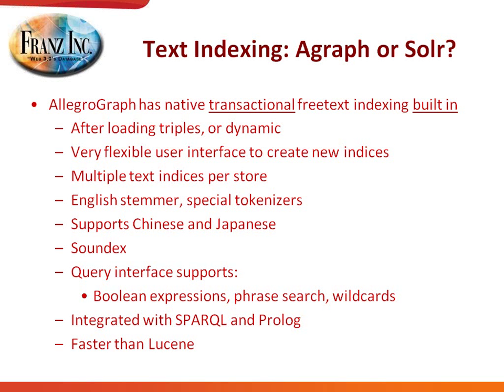I'll show you in a minute a very flexible user interface to create these new indices. You can have multiple indices per store. We have stemmers, we have tokenizers, we support Chinese and Japanese, soundex, and we can do all the kinds of queries you might expect to support — fully integrated with SPARQL and Prolog. And it's actually faster than Lucene, both for indexing and for retrieving, because it's built into the store itself.